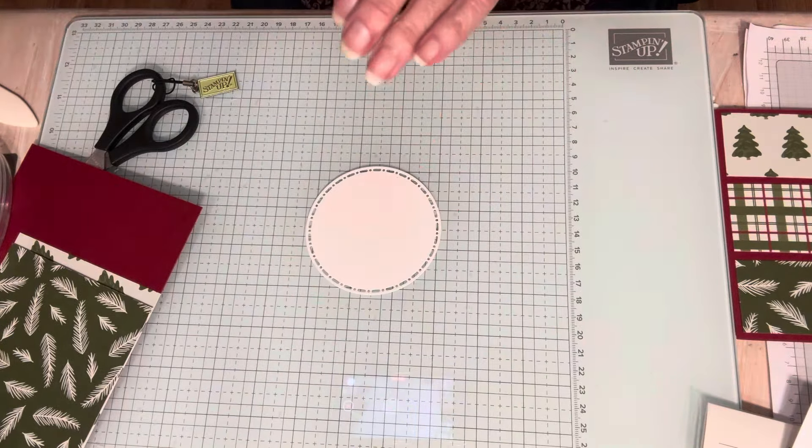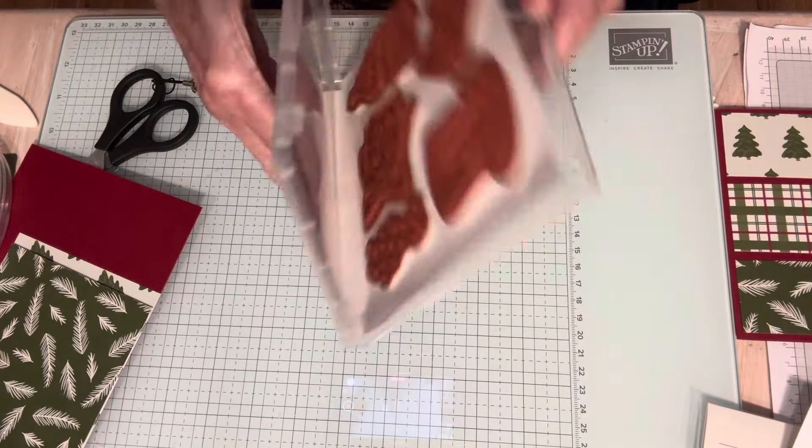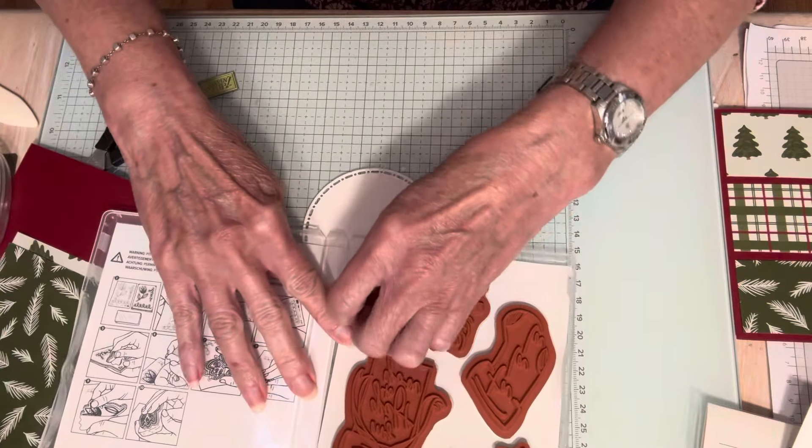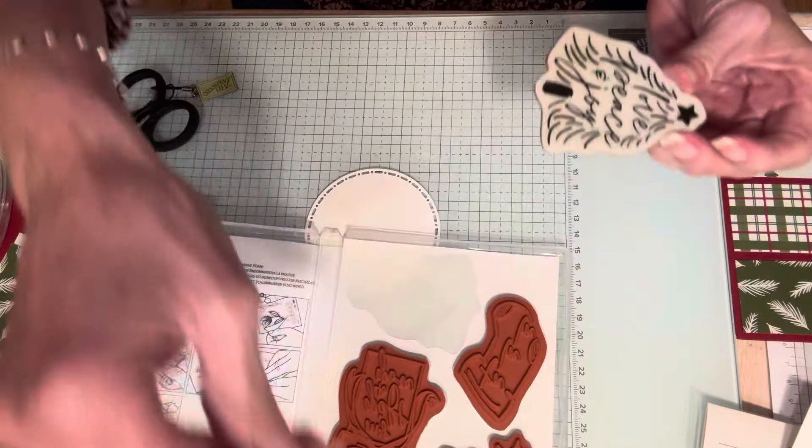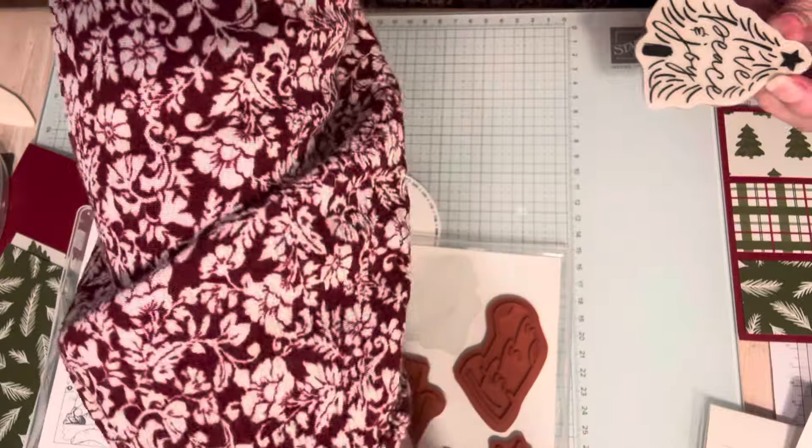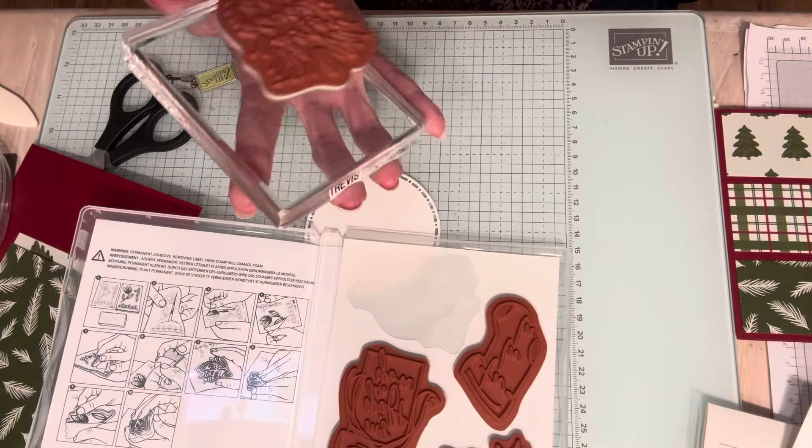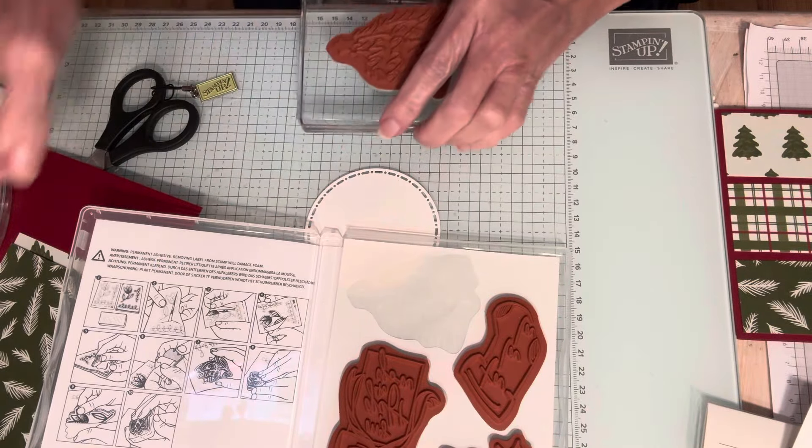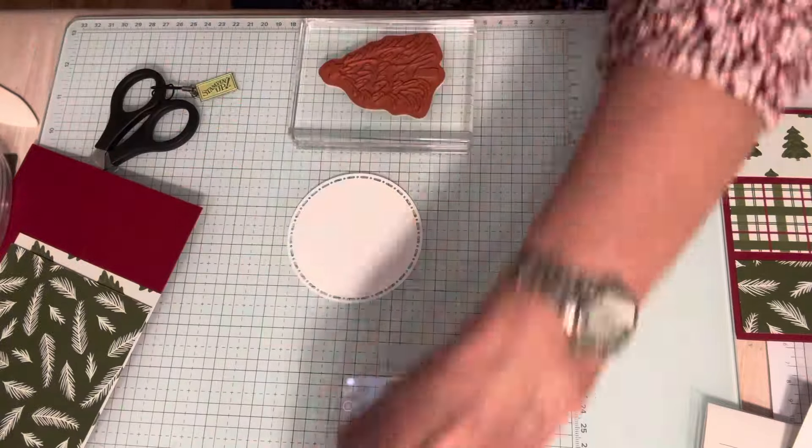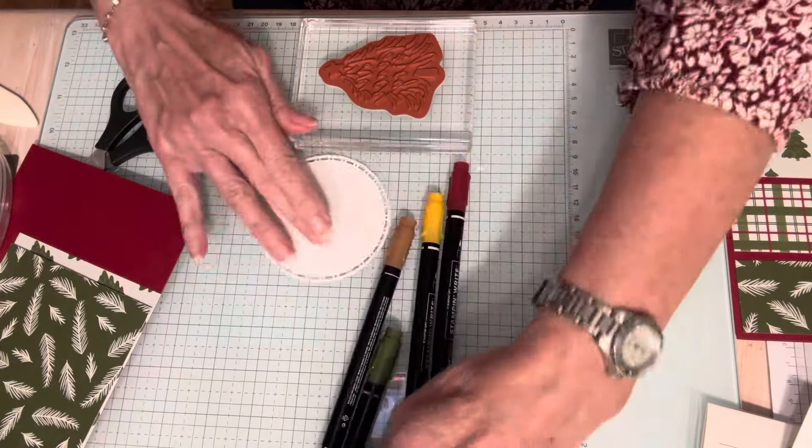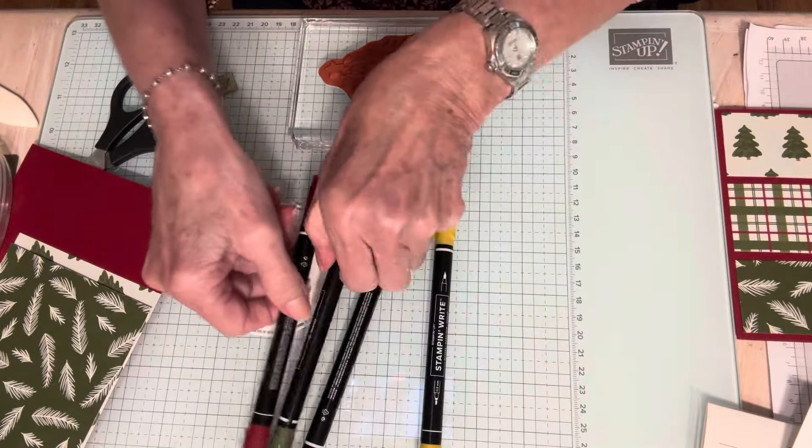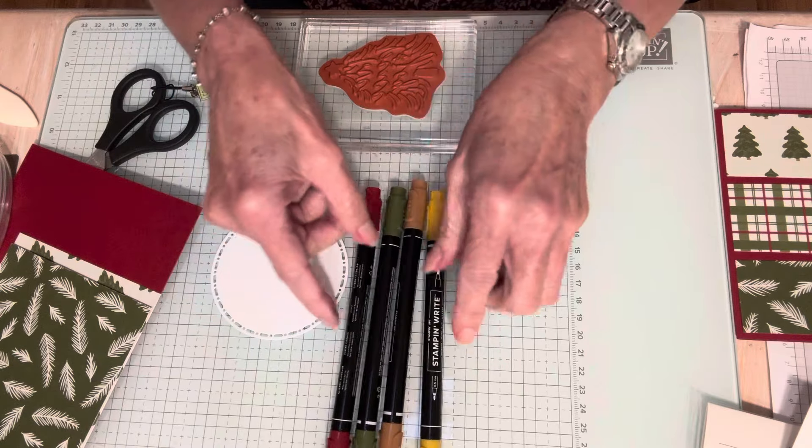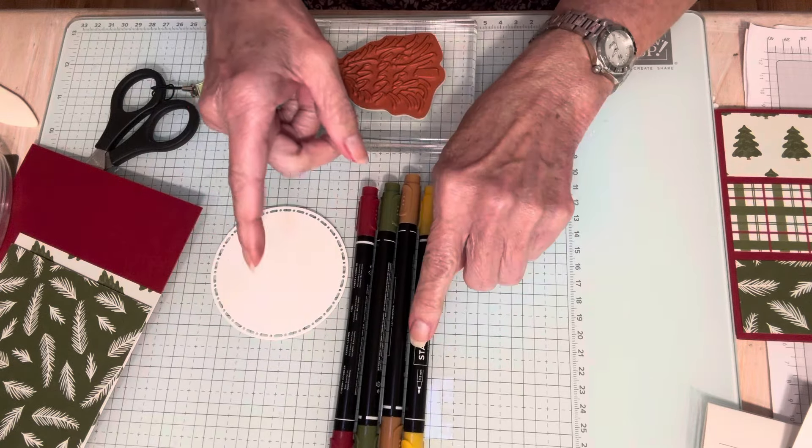And now I'm going to be using that stamp that I love, the Christmas tree. I need to put that on a decent-sized block. I'm going to be using my marker. So the colors I'm going to be using today, of course, Cherry Cobbler, Mossy Meadow. I'm going to be using Pecan Pie and also Crushed Curry.